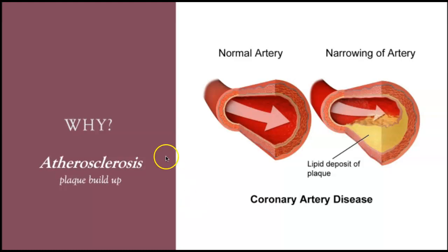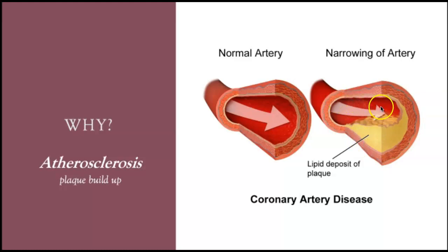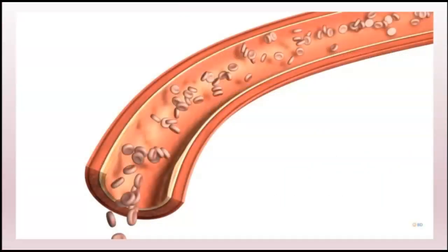Atherosclerosis means plaque buildup in the vessels. A normal artery allows nice smooth blood flow. Once plaque develops, it narrows that blood flow going to the heart, and pieces of plaque can break off and totally occlude a vessel. This animation demonstrates how plaque buildup can block blood flow. If it happens over a long period of time, the patient may develop collateral circulation — minor vessels which become active and reroute blood flow around the blockage. However, this won't happen if the blockage forms suddenly.